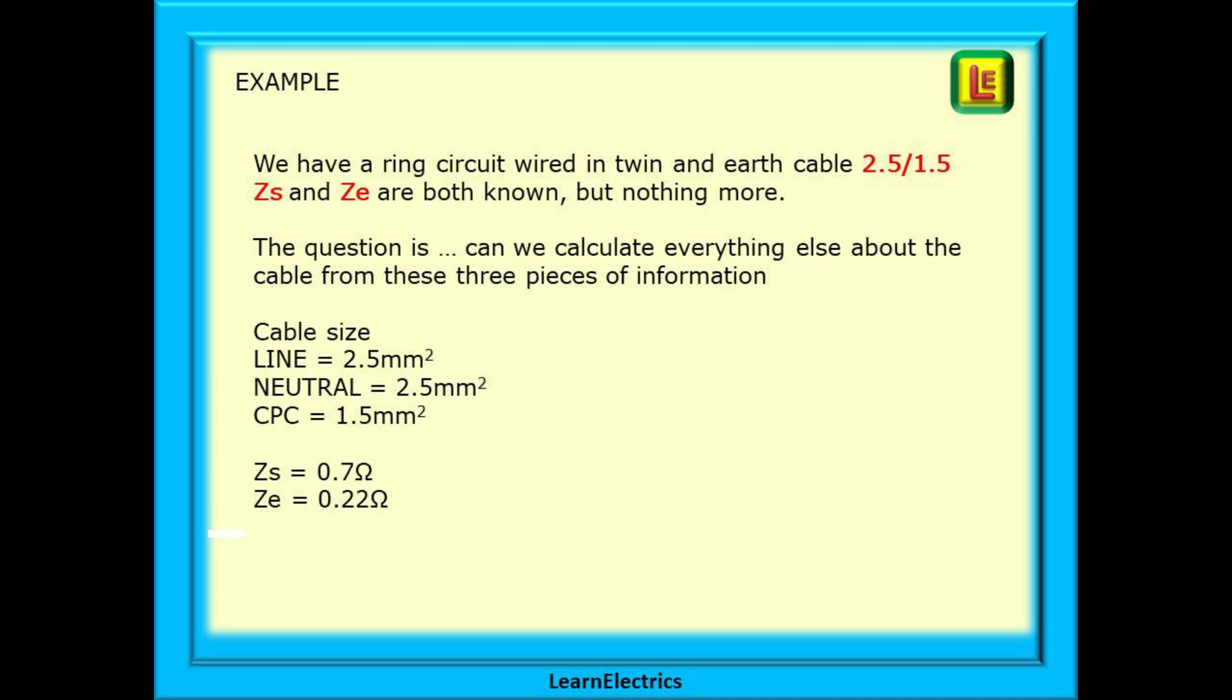We can best show this method with a worked example. We have a ring circuit that is wired in twin and earth cable with a 2.5 mm line and neutral and 1.5 mm CPC or earth. And Zs and Ze are both known but nothing more. The question is, can we calculate everything else about the cable from these three pieces of information?